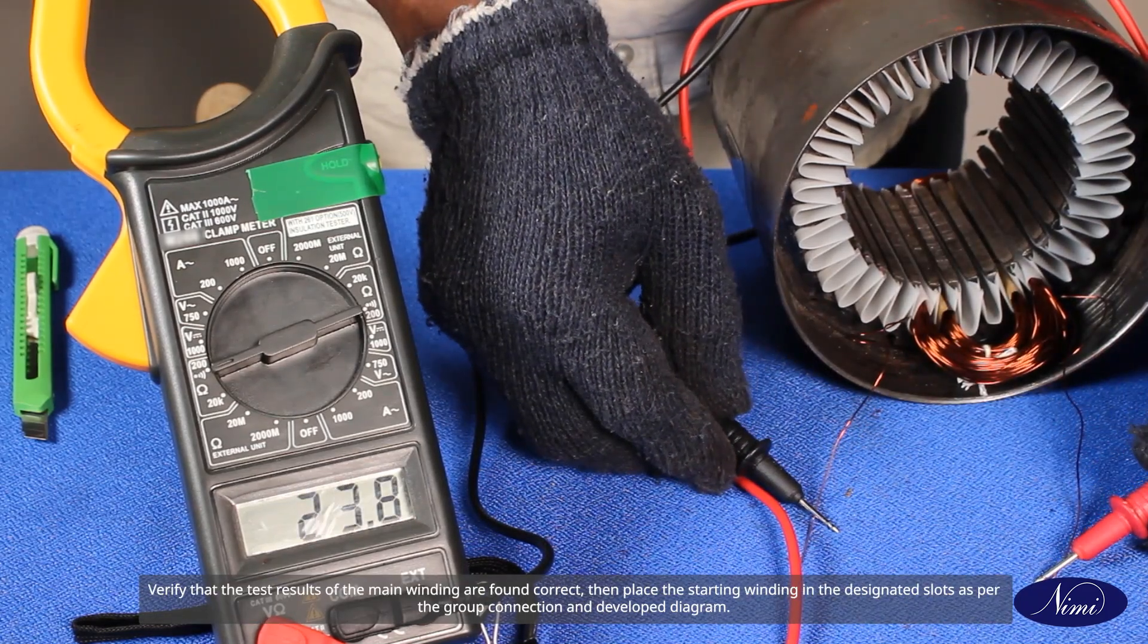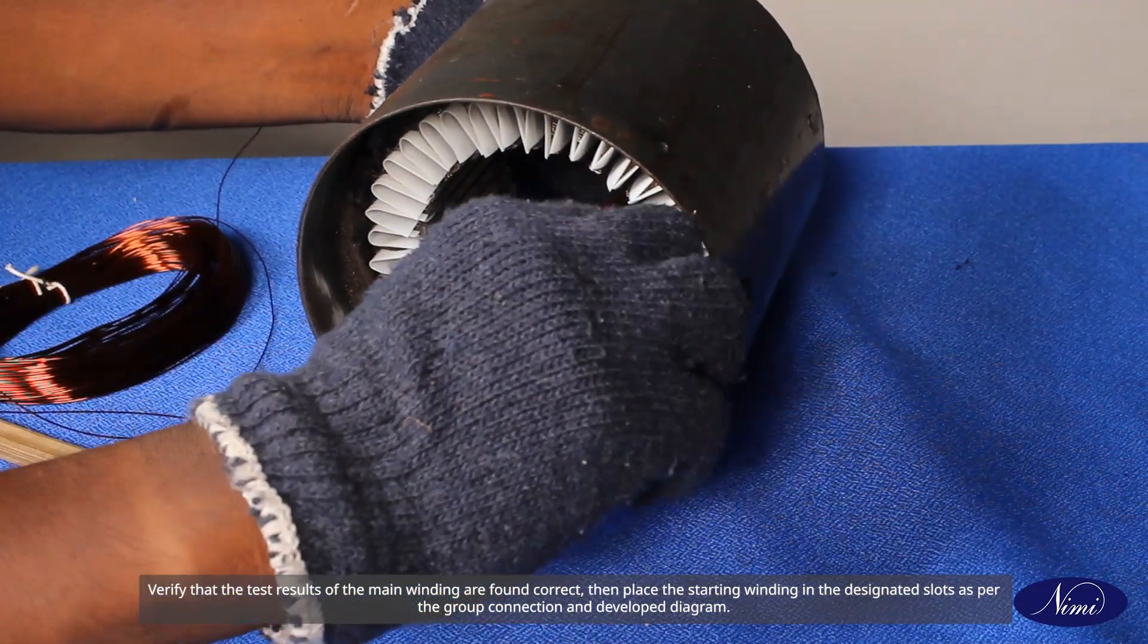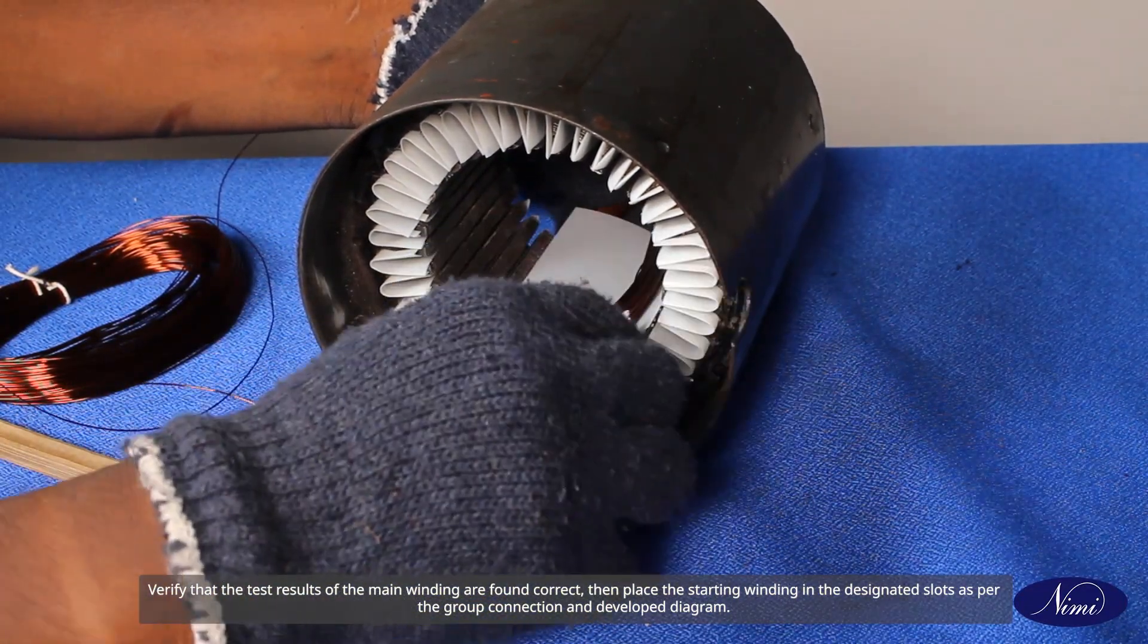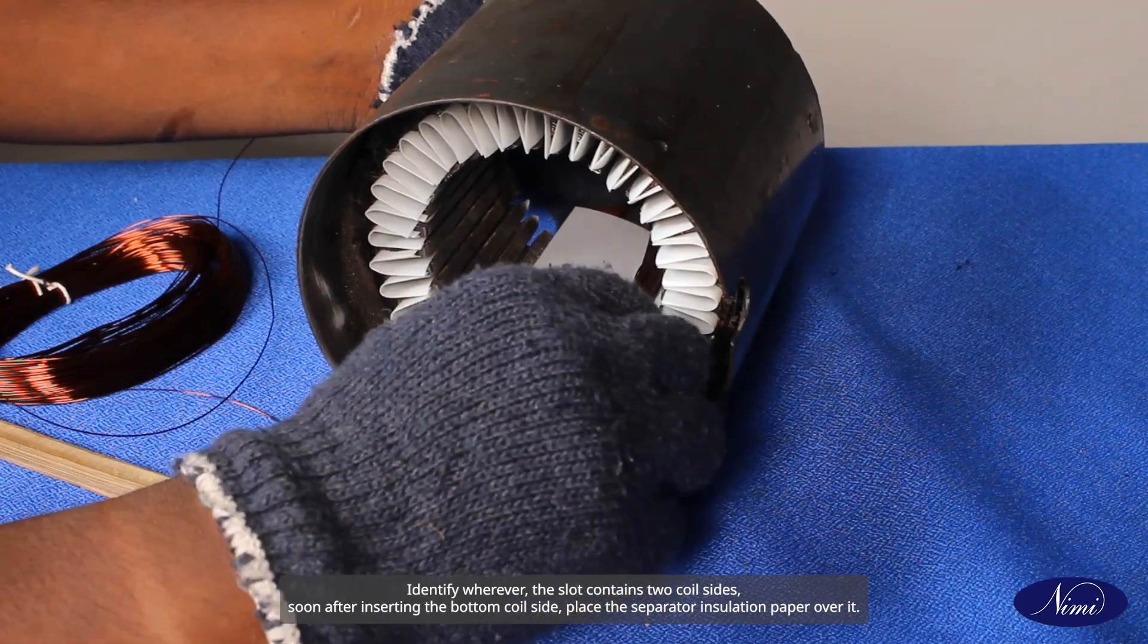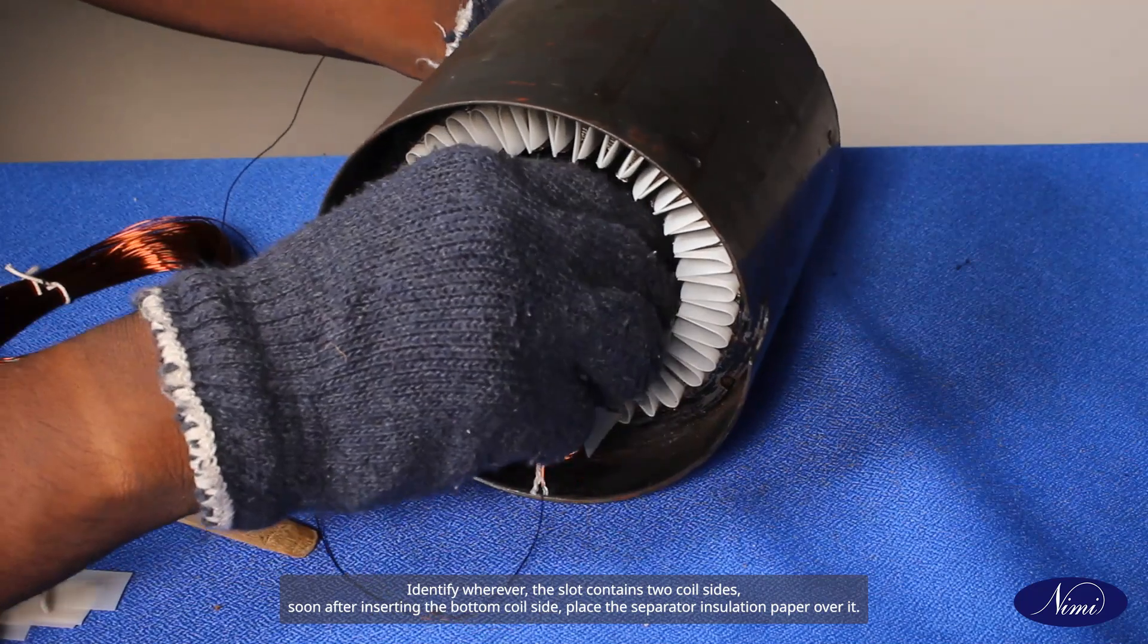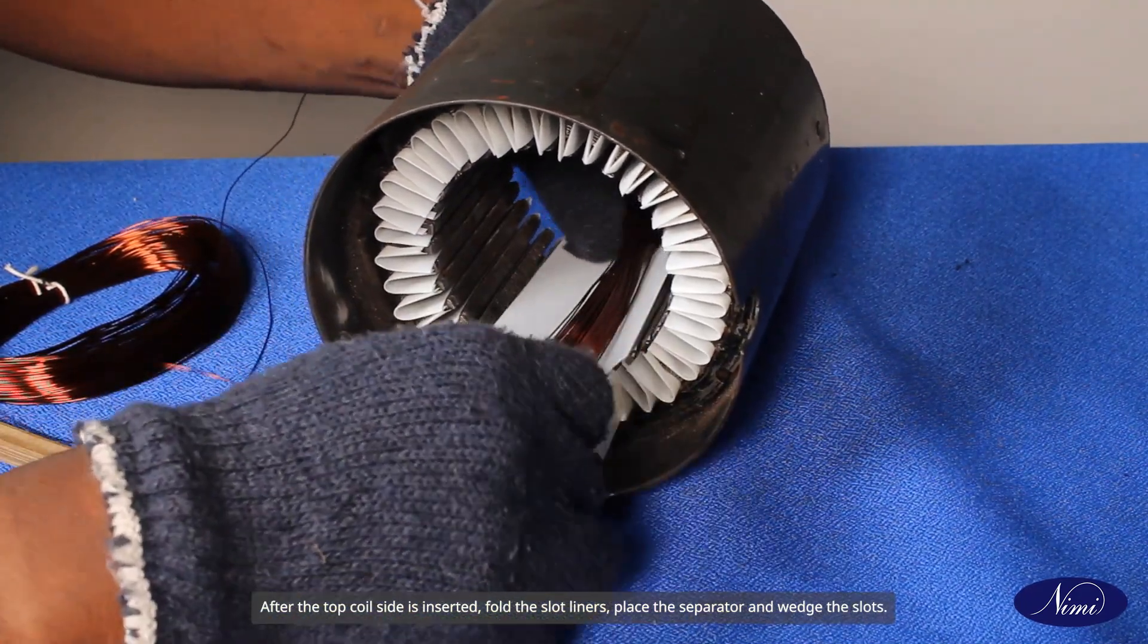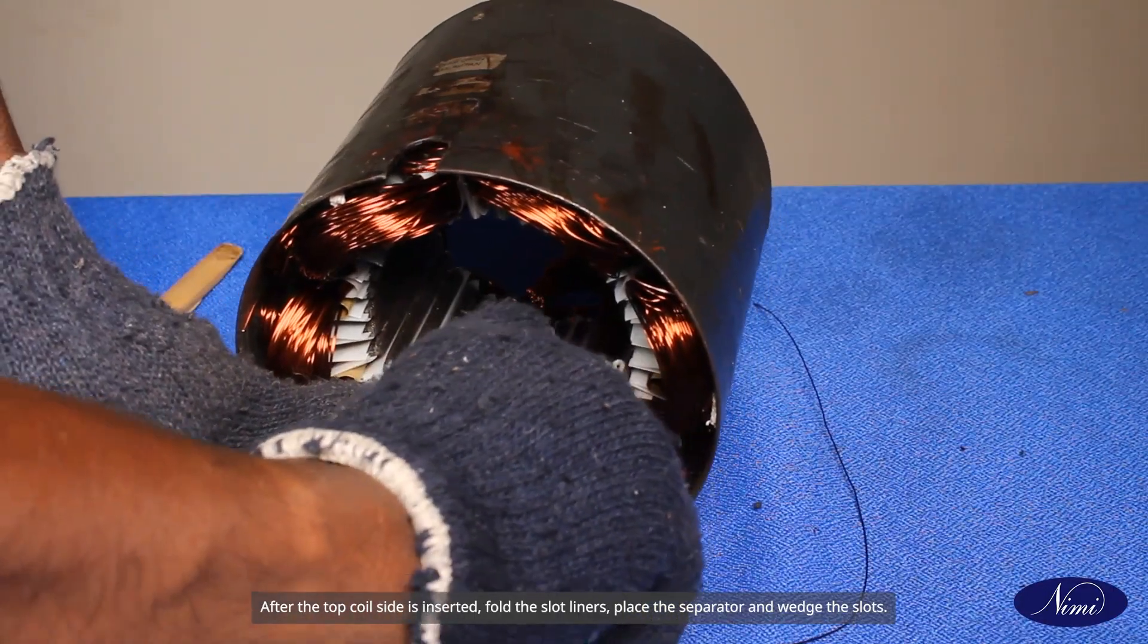Verify that the test results of the main winding are found correct, then place the starting winding in the designated slots as per the group connection and developed diagram. Identify wherever the slots contain two coil sides. Soon after inserting the bottom coil side, place the separator insulation paper over it. After the top coil side is inserted, fold the slot liners.